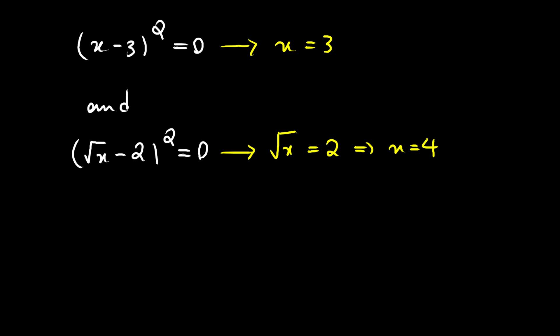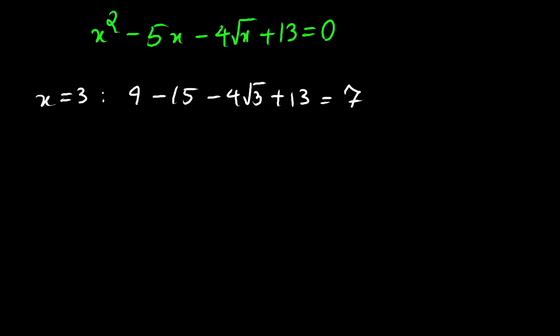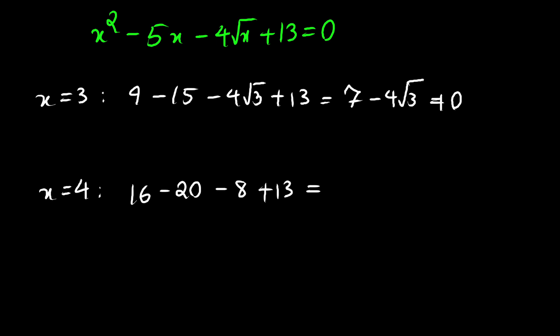However, once we substitute x equals 3 or x equals 4 back into the original equation x squared minus 5x minus 4 times the square root of x plus 13 equals 0, we see that neither satisfies it. For x equals 3: 9 minus 15 minus 4 times square root of 3 plus 13 equals 7 minus 4 root 3, which is not 0. For x equals 4: 16 minus 20 minus 8 plus 13 equals 1, which is also not 0.